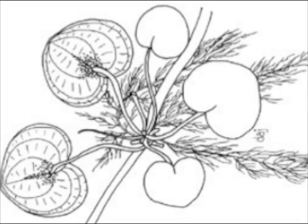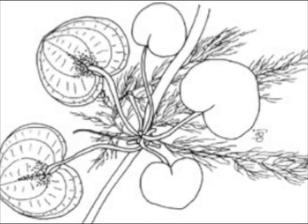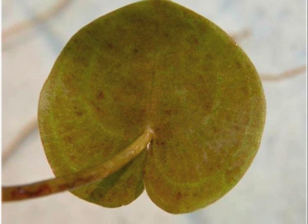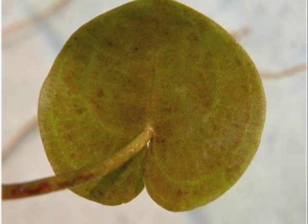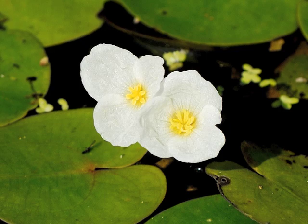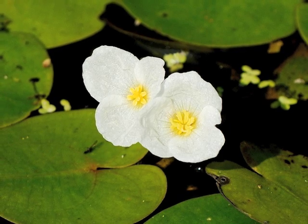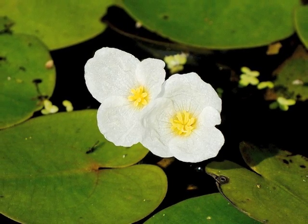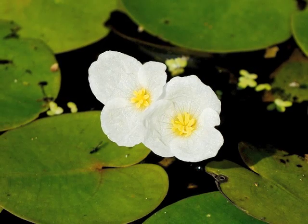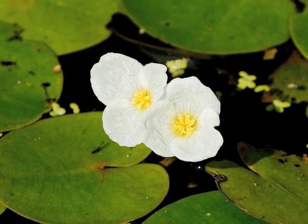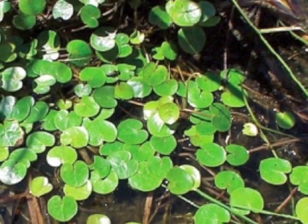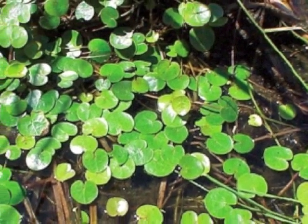The leaves of European frogbit are heart-shaped, one to two inches in width, and are distinctly spongy, dark purple or red on the underside. The flowers of frogbit are white, one and a half centimeters wide with three petals. Frogbit rarely produces seeds; instead it spreads through vegetative reproduction.